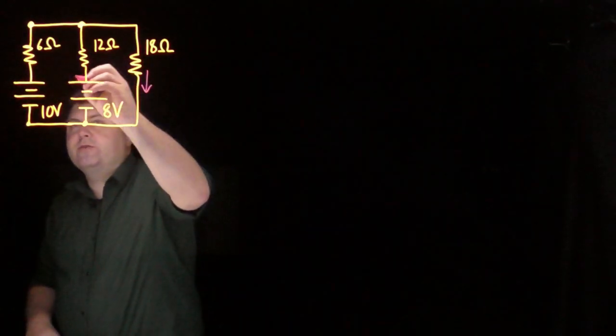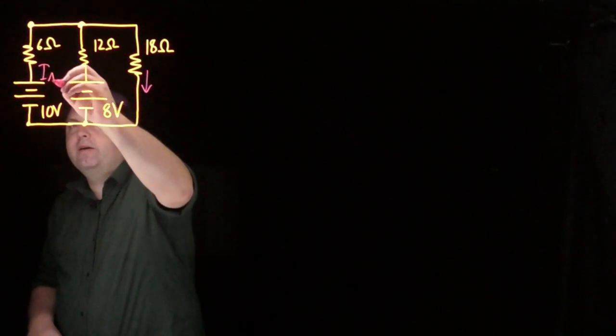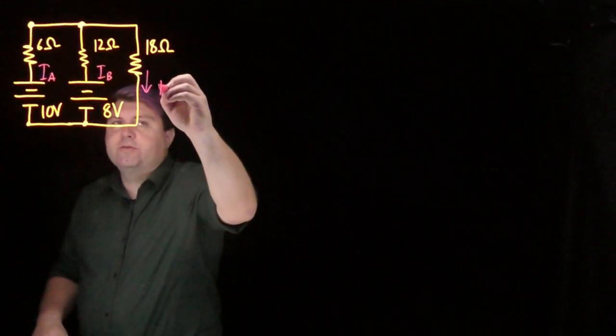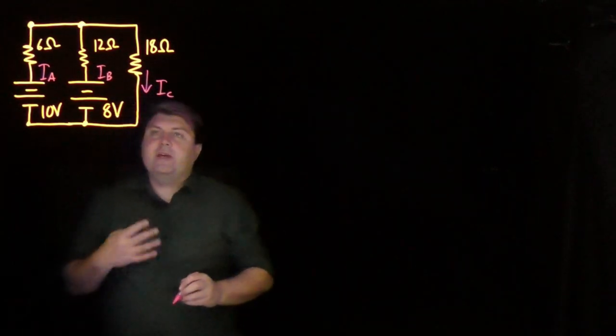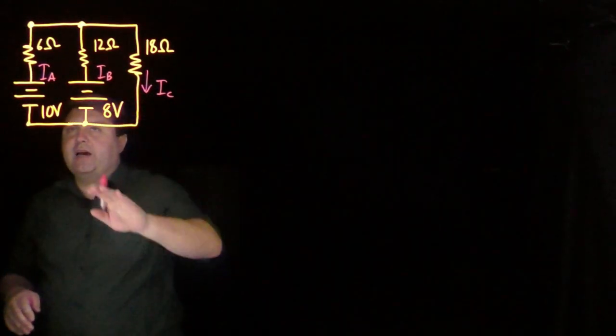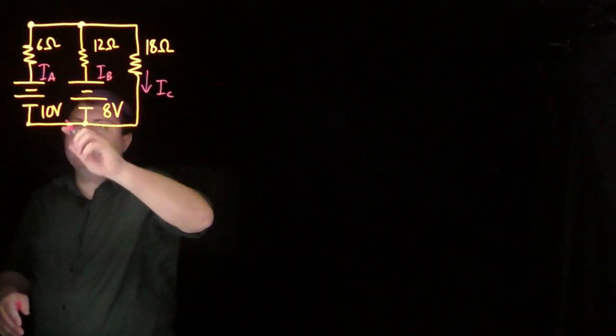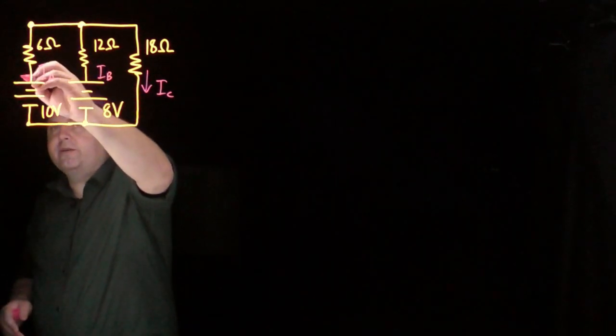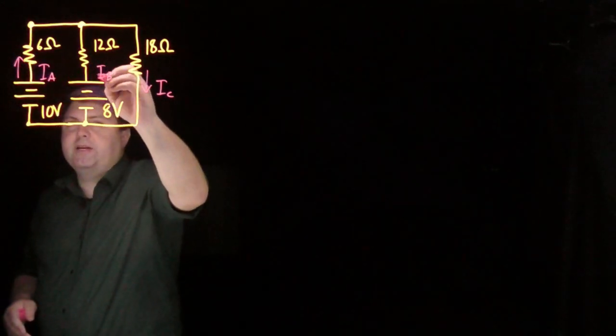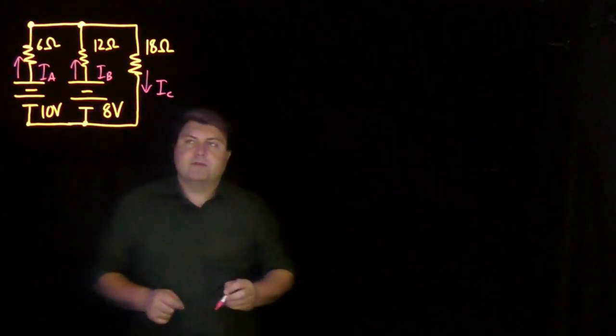Maybe we also call this one Ia, Ib, and this one Ic. So in the labeling process, now we also have to make a guess for the directions of these two currents. I'm going to guess they're going to go with their batteries, so I'm saying Ia is going this way, Ib is going this way.